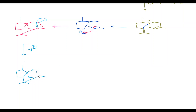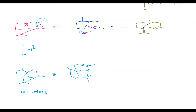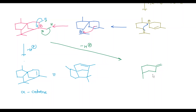Here CH3, here double bond, and this is known as alpha-selinene. The structure has CH3, CH3, CH, CH3, CH3, CH3, and here a double bond. If you lose this proton instead, with loss of H+, the product is called beta-selinene.